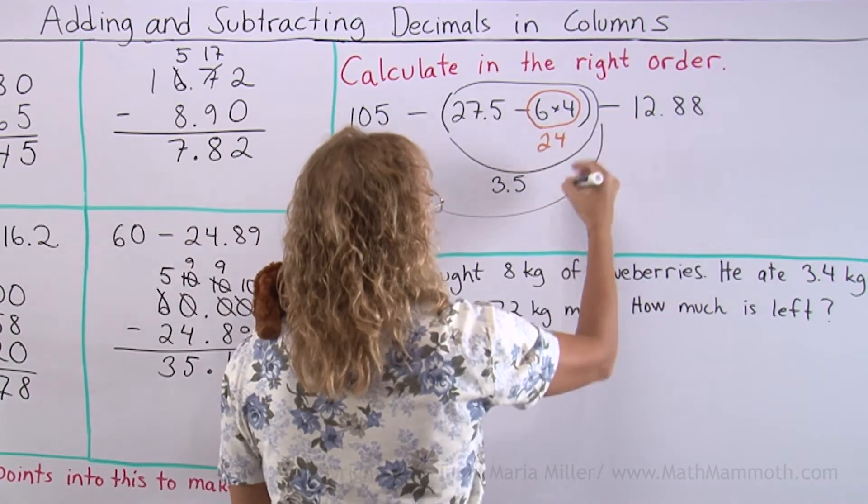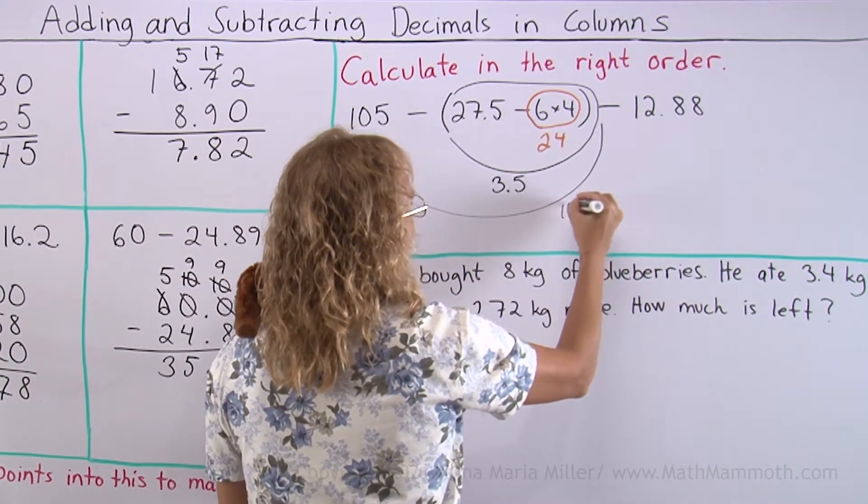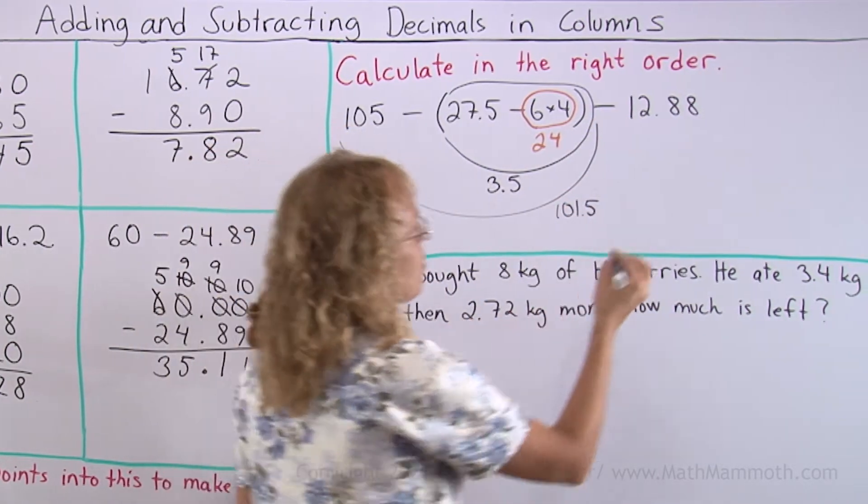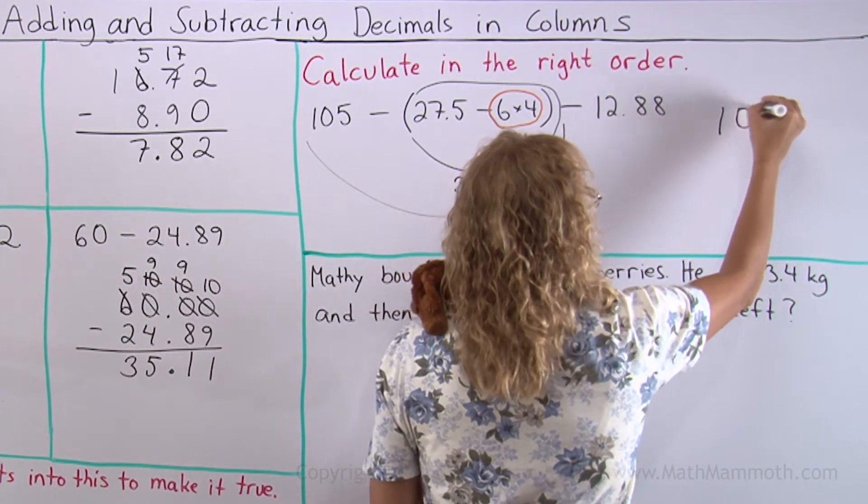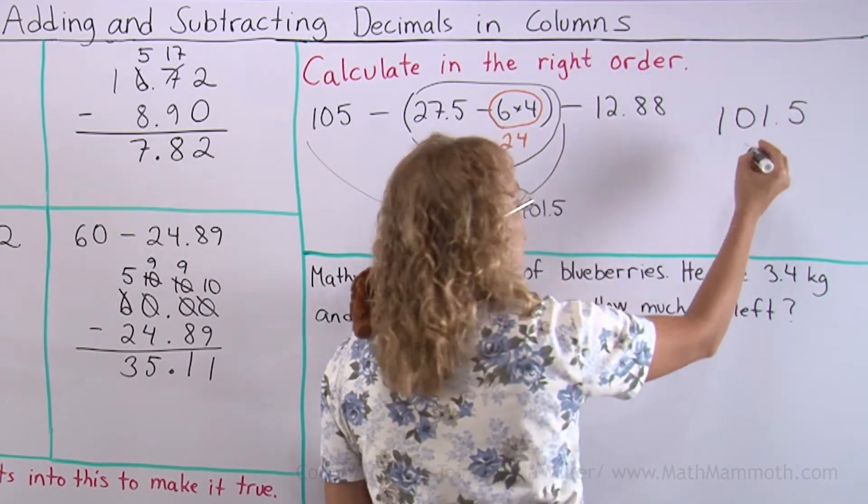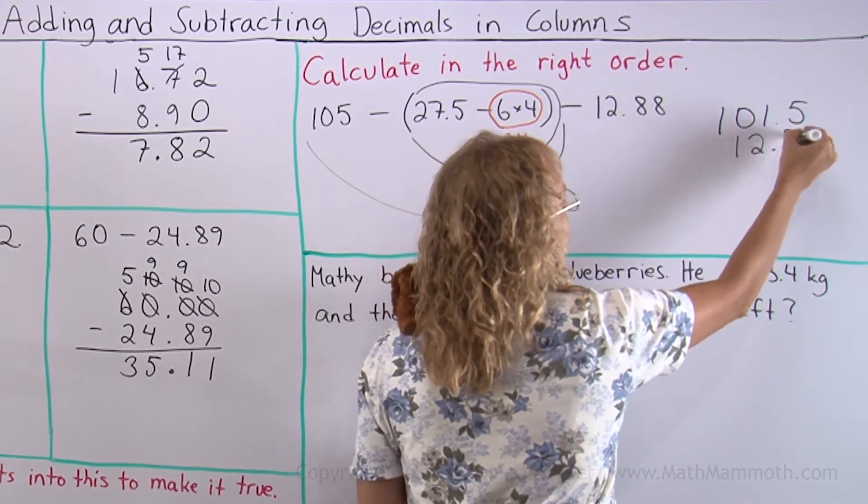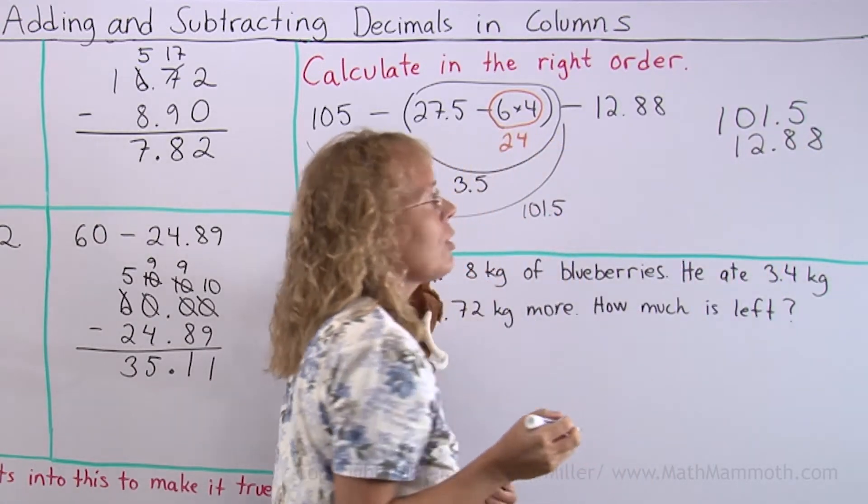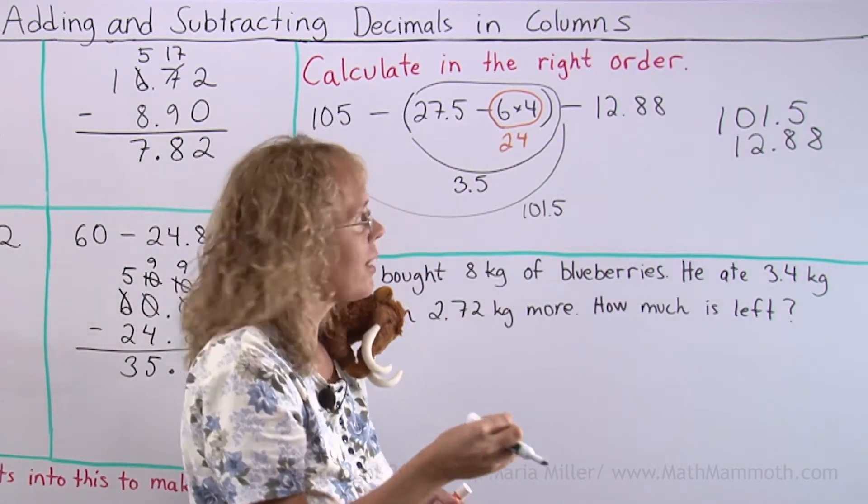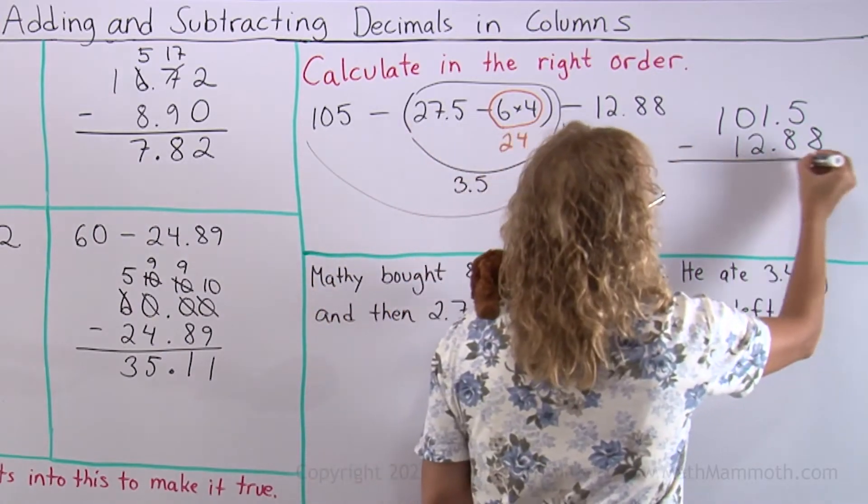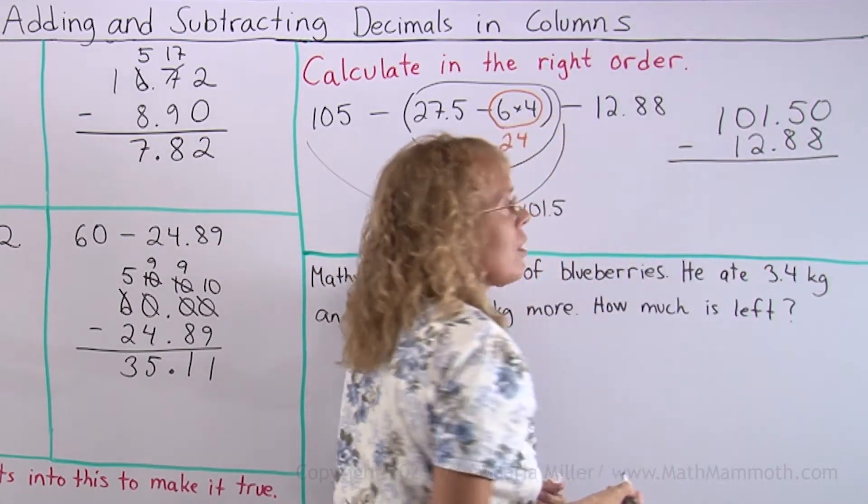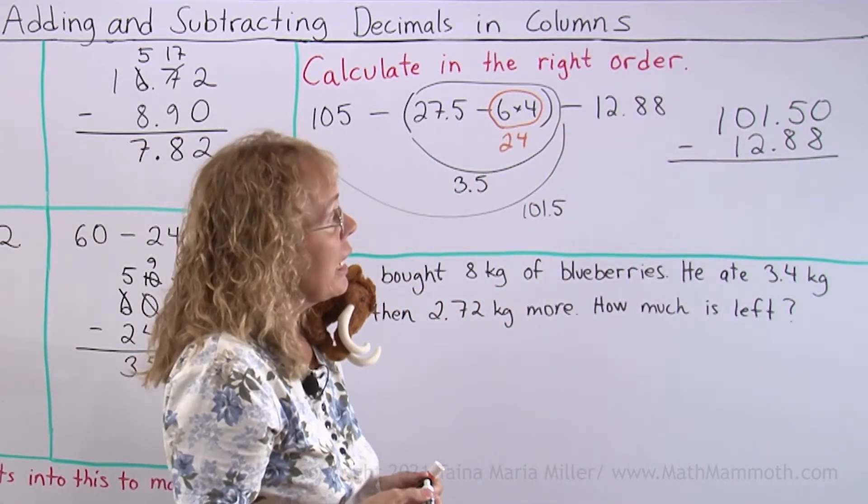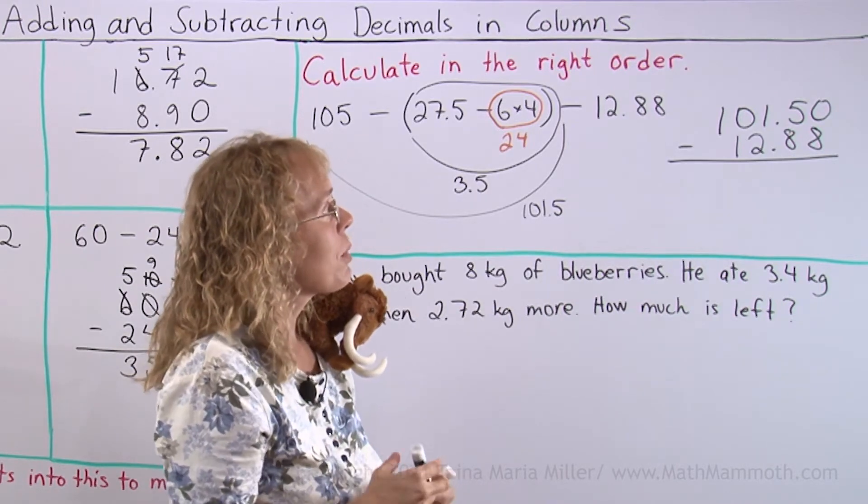So all of this is 101.5, and then I just have one more subtraction to do. 101.5 minus 12.88. Notice how I line up the numbers again so that the decimal points are lined up. Zero here, zero here. I need to put a zero there so I can now subtract, and I can't even start without regrouping.